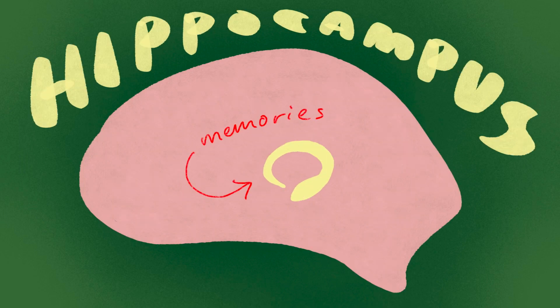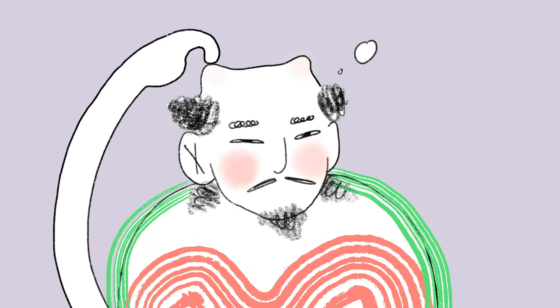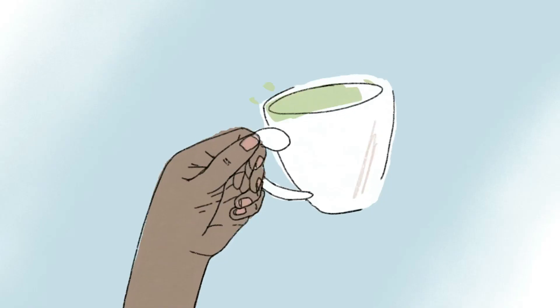This process affects the hippocampus first, resulting in short-term symptoms like having trouble remembering new things. As damage spreads to the rest of the brain, long-term symptoms such as losing physical control appear.